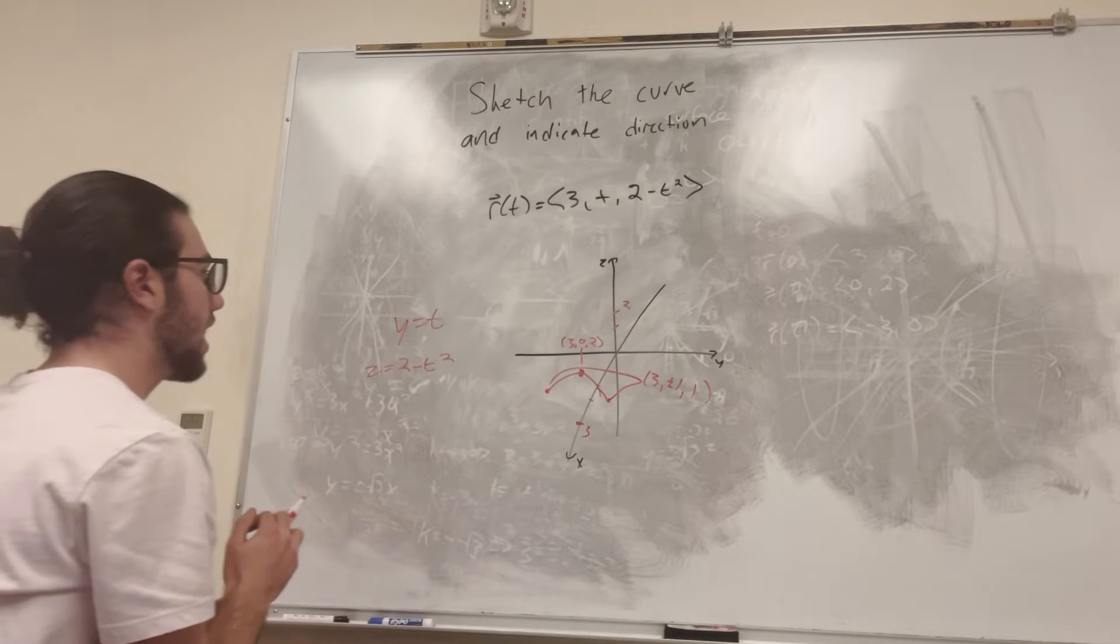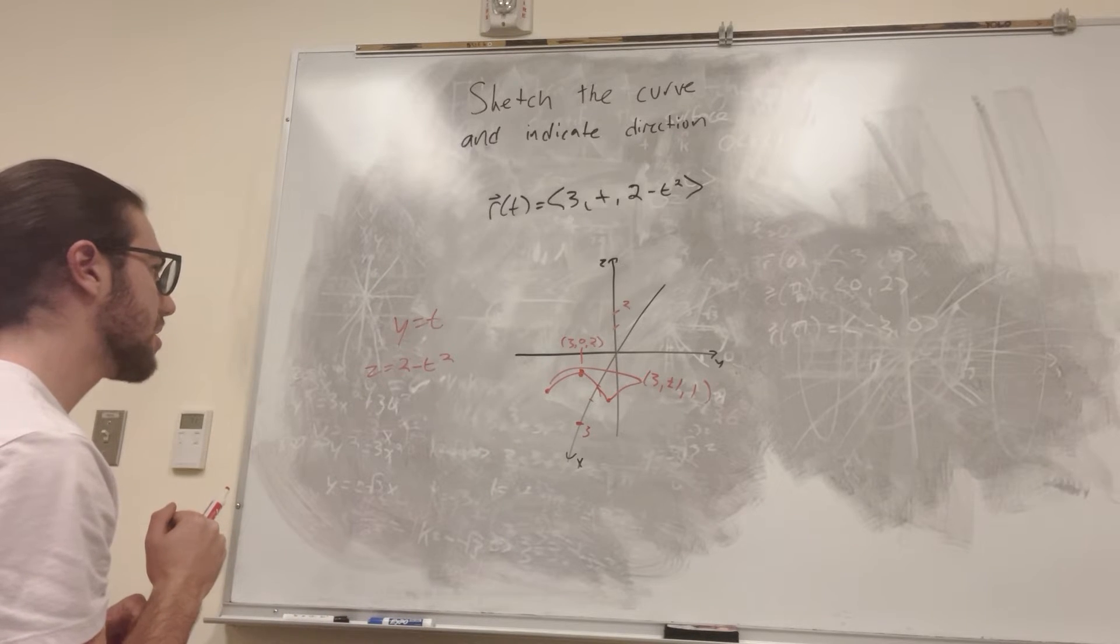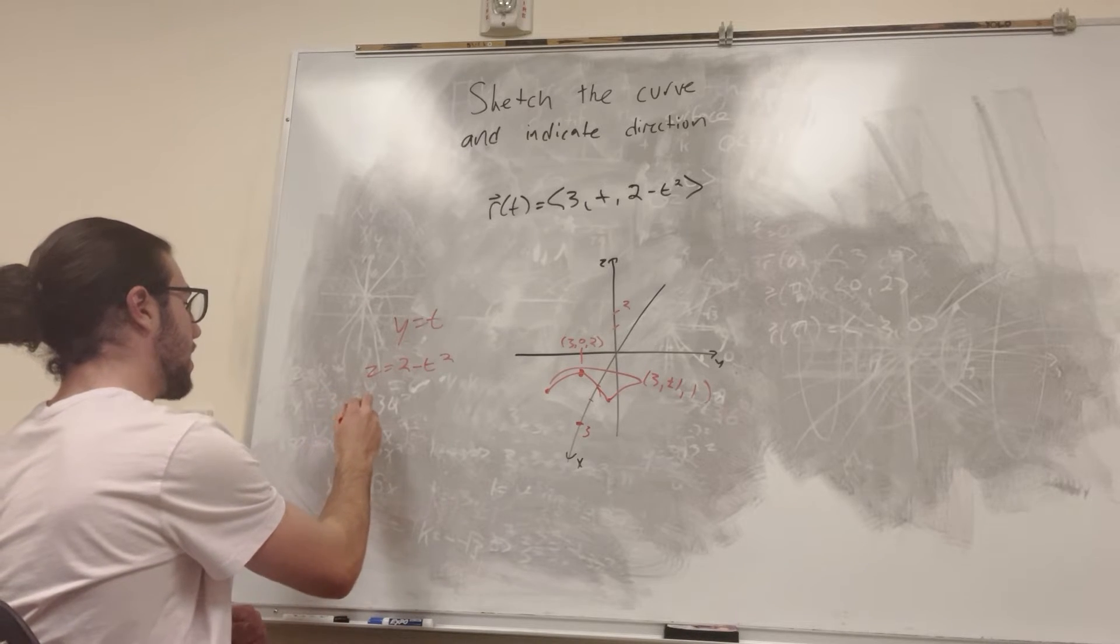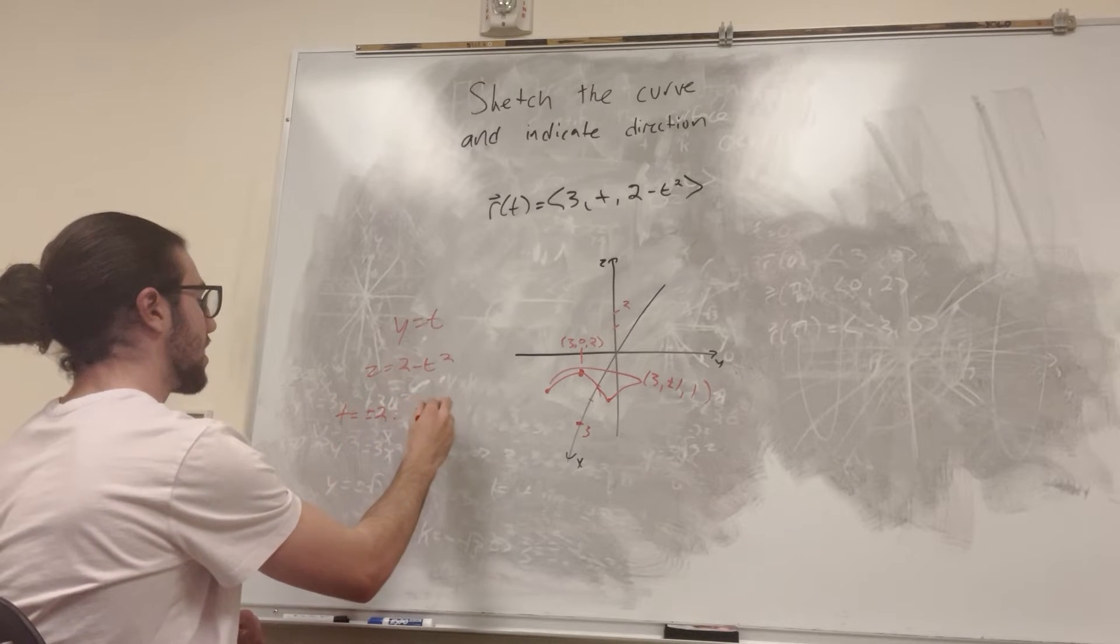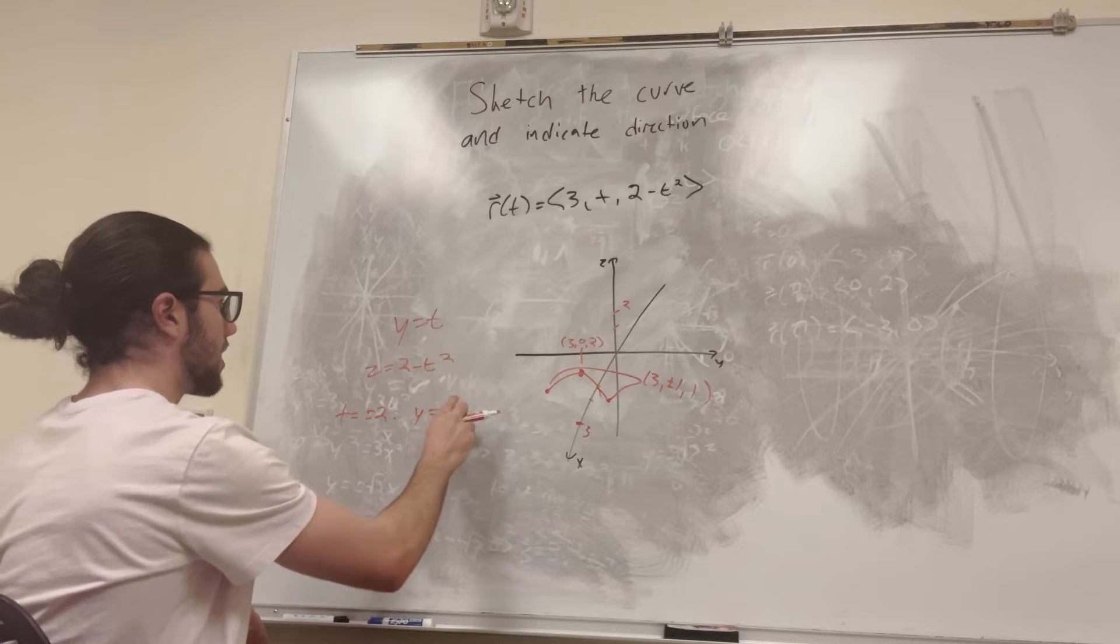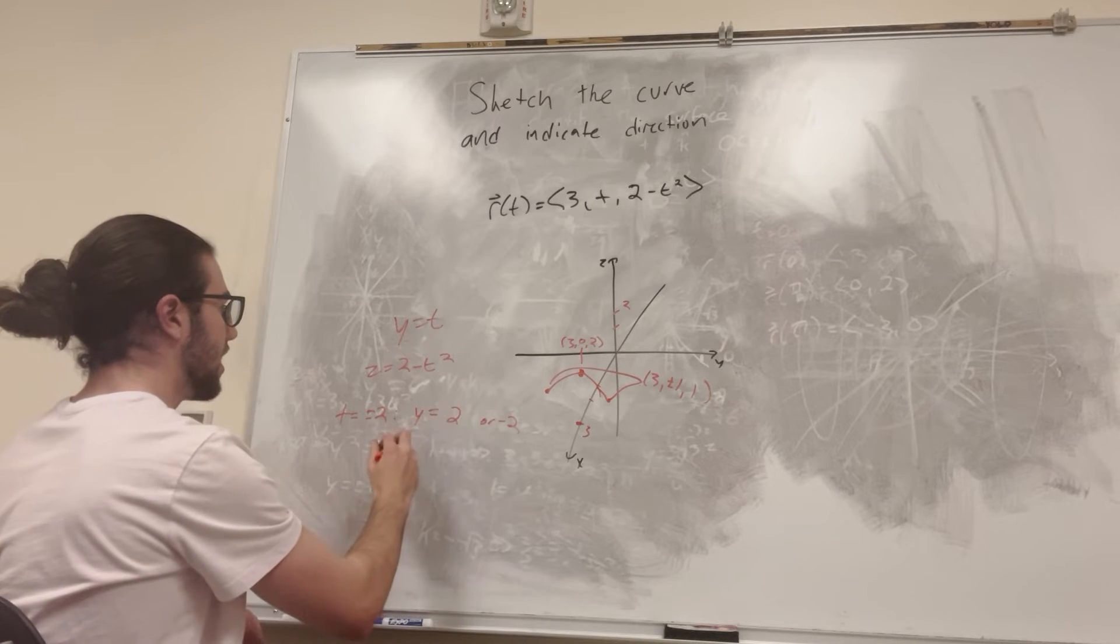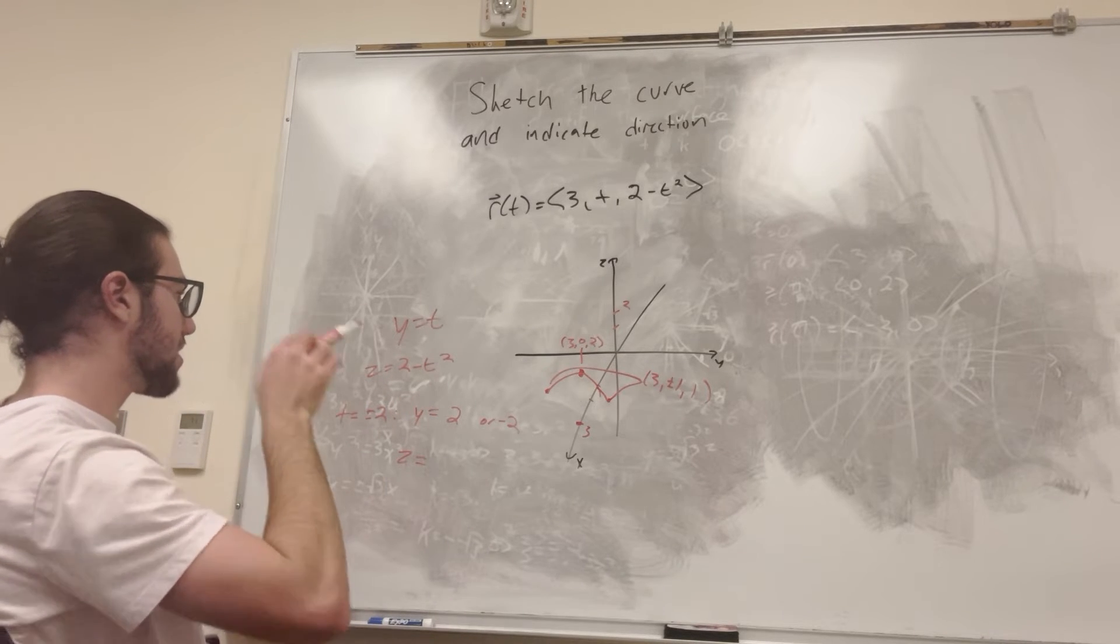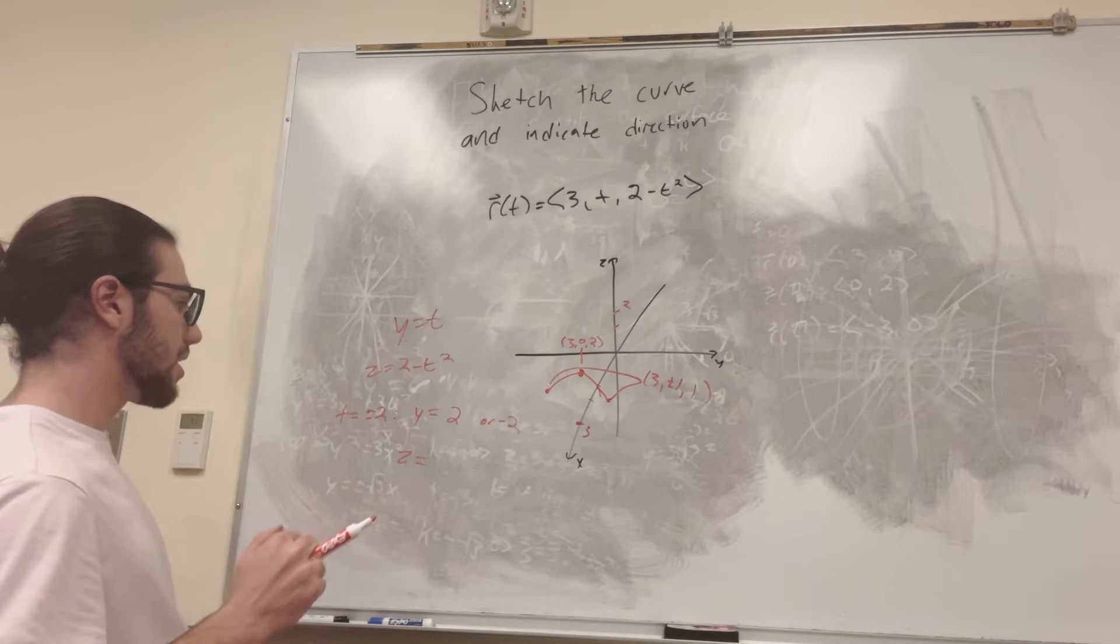And then, let's say t is equal to 2. So t is equal to positive or negative 2. We're going to get that y is equal to 2 or negative 2. And z is going to be equal to 2 minus t squared, so it's going to be negative 2.